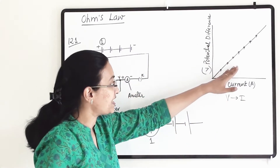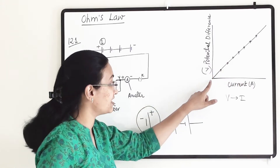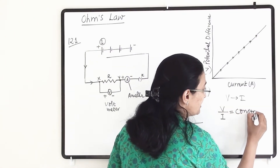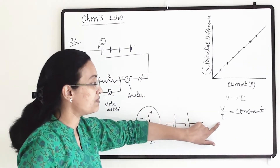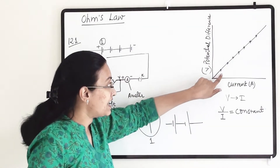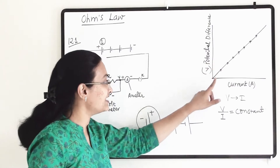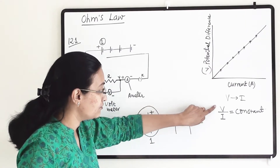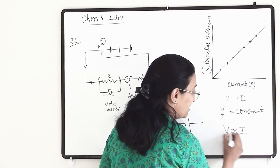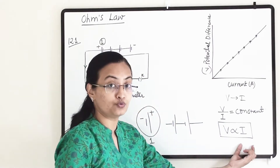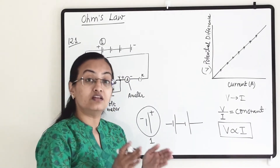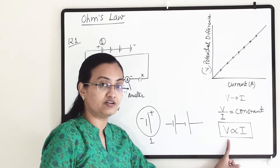Once we plot all the points, we get a straight line that originates from zero. This tells us that the V/I graph is constant — it gives a constant value. Whatever line we get from the readings of this circuit, that line connects all the points in a straight line originating from zero. So we get V/I equals constant, which also means that V is directly proportional to I — potential difference is directly proportional to current.